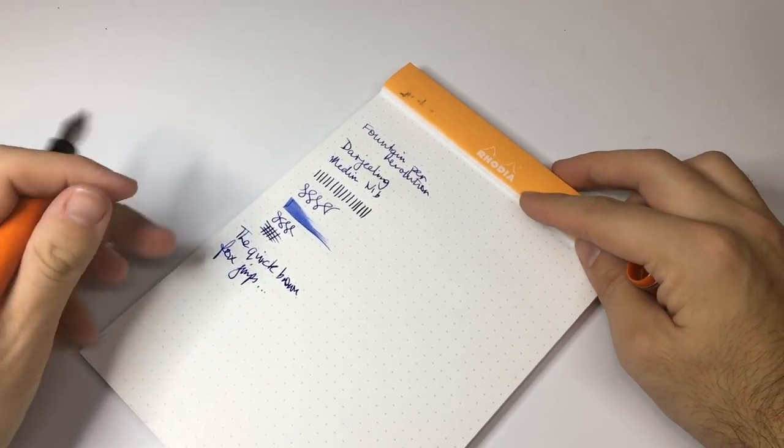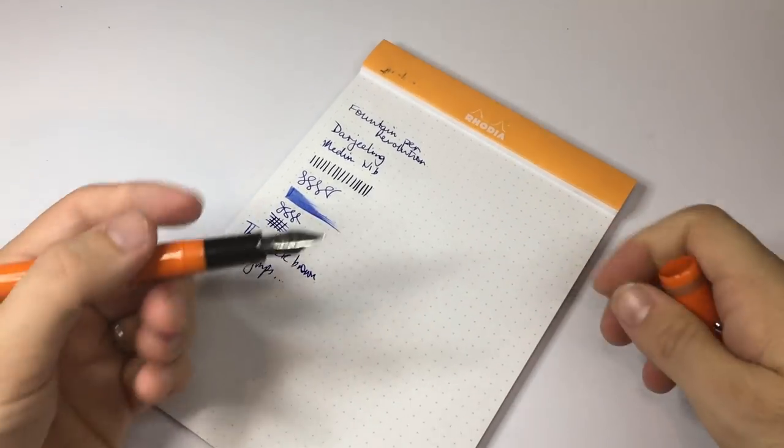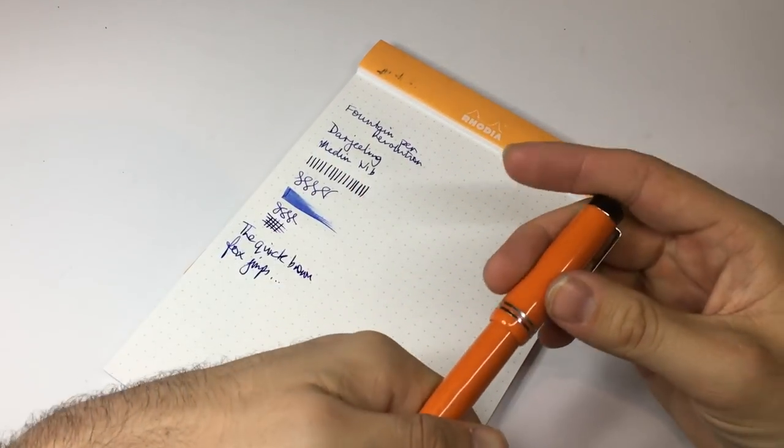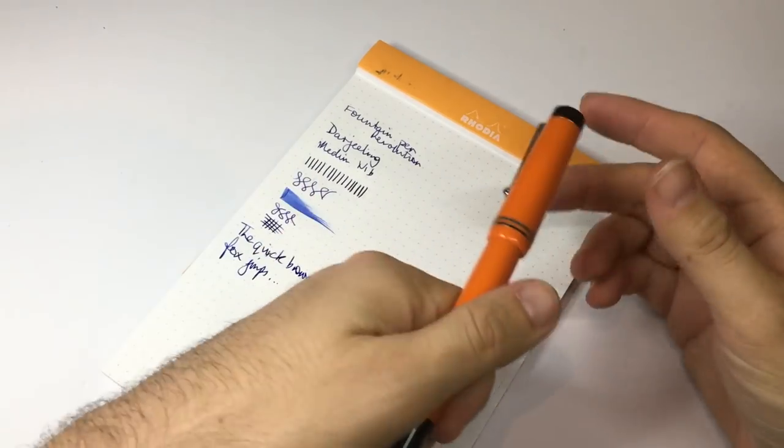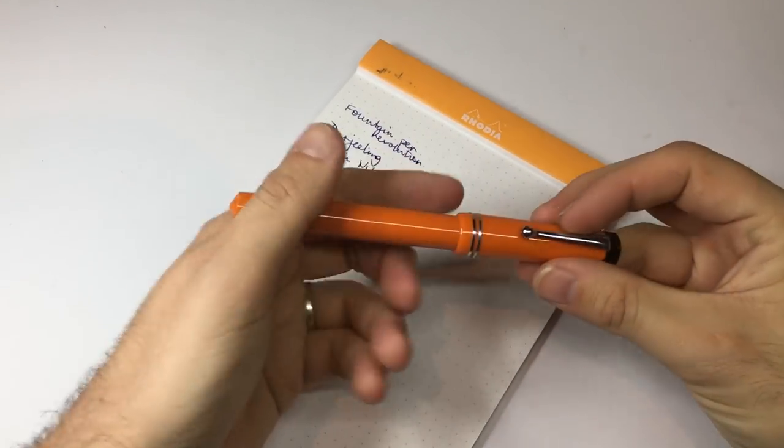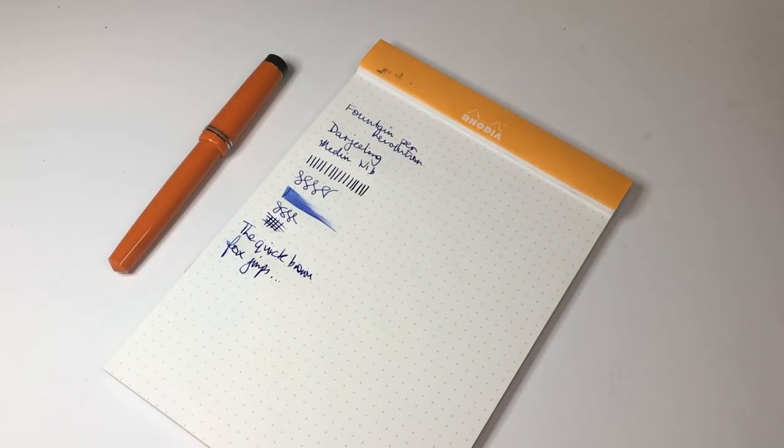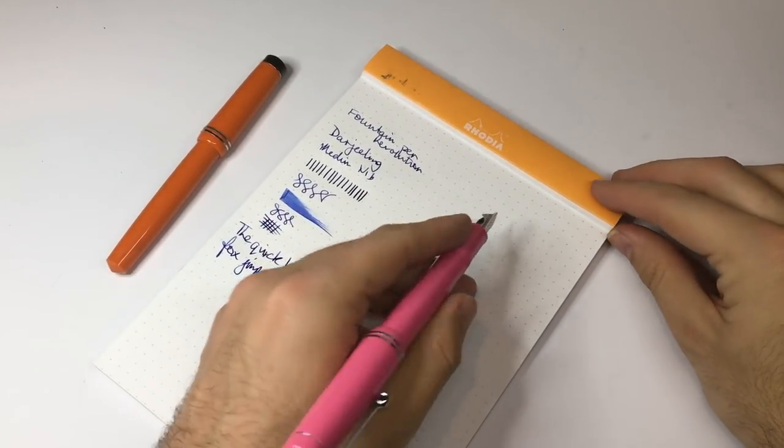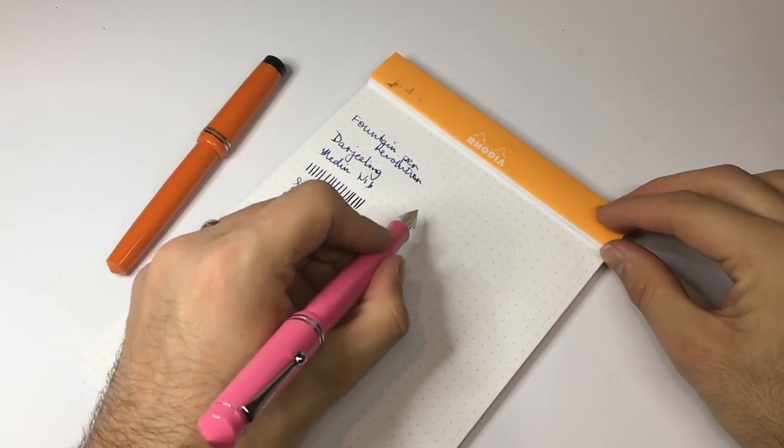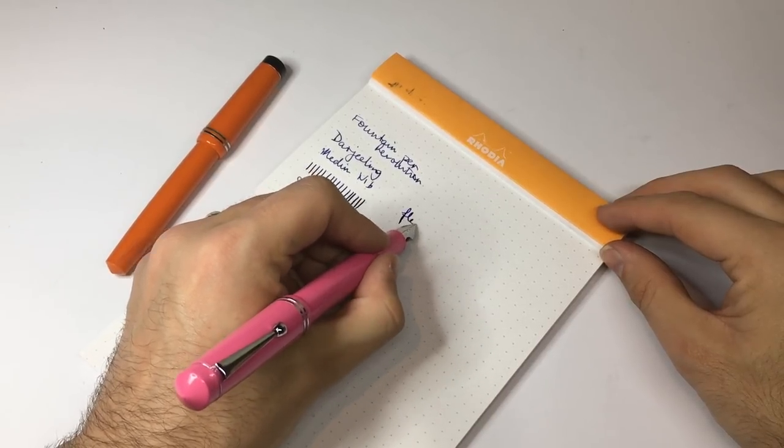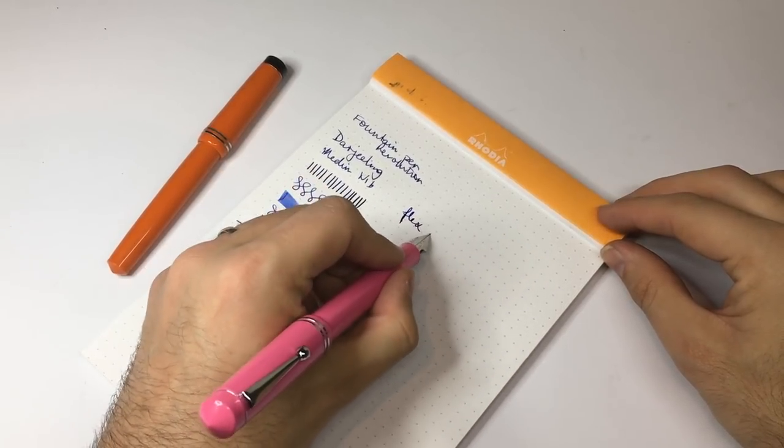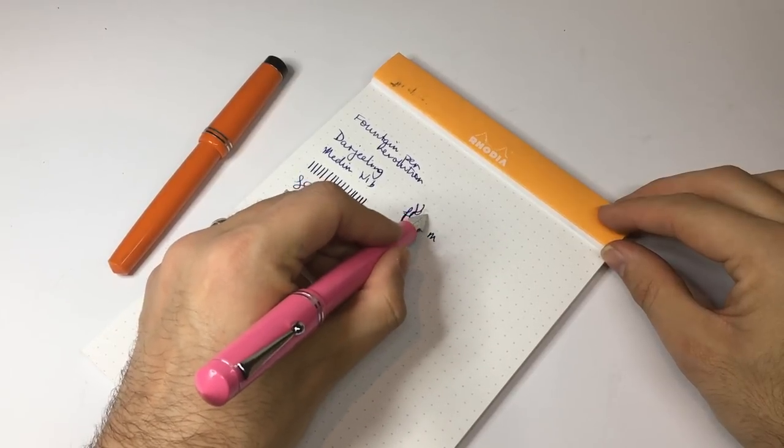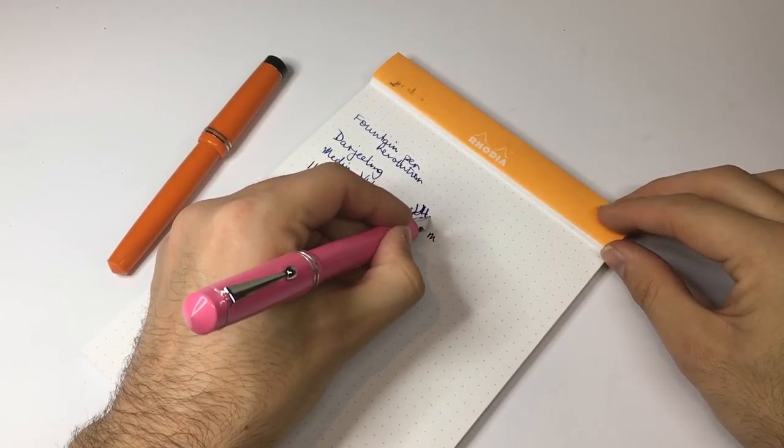So it lays down a nice line of ink. It's a really lovely nib to write with, and on this pen it took a great size, a great shape, and a lovely lightweight pen. So next we have the Darjeeling here with the ultra flex nib.